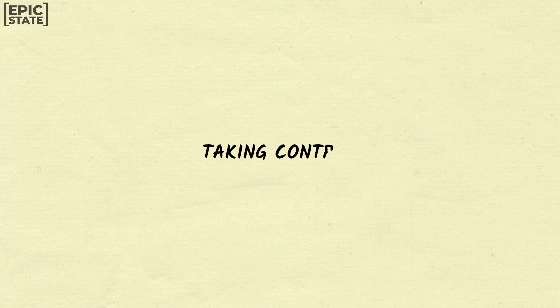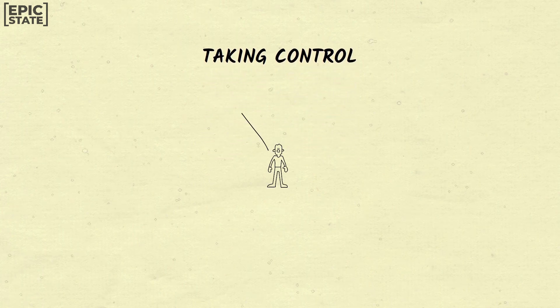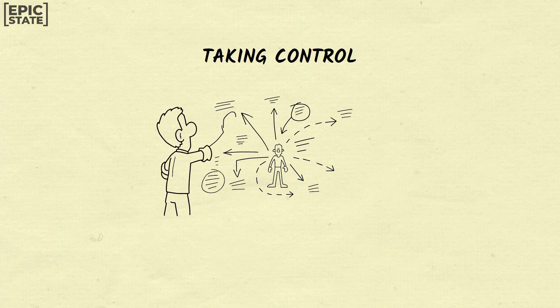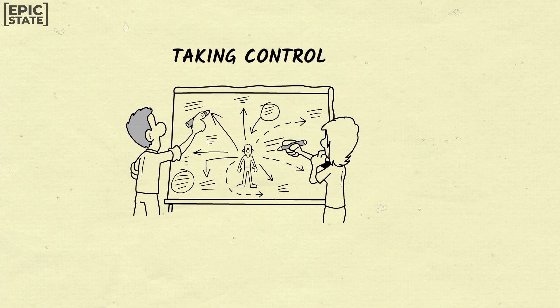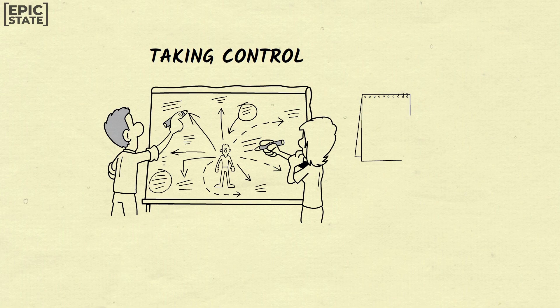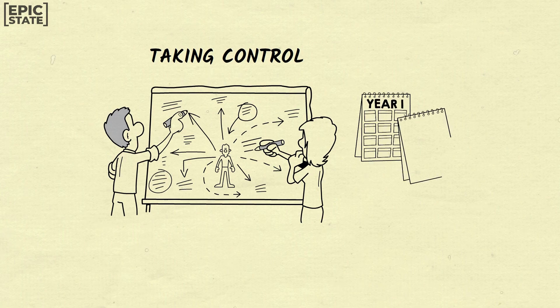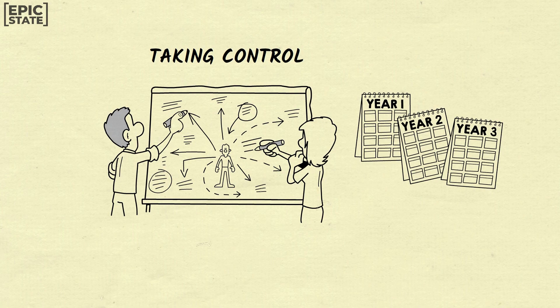Number five: Rich people take control of their lives, while poor people react to the world around them. Rich people have mastered the skill of setting expectations and actively pursuing them, rather than passively allowing life to happen to them. This ability to take control of their lives is a key habit of successful people, and one that is often out of reach for those living in poverty.